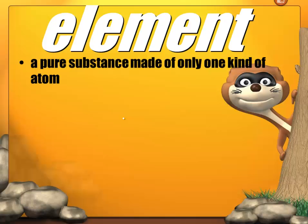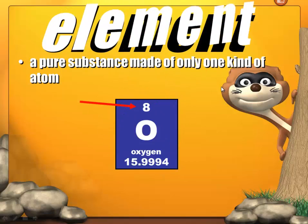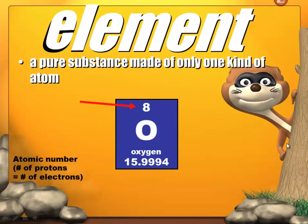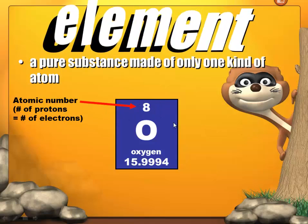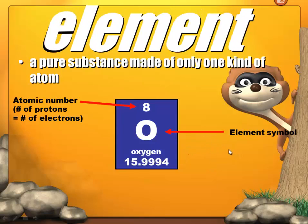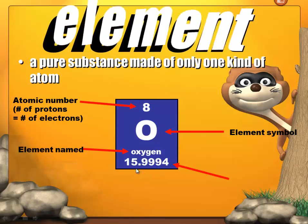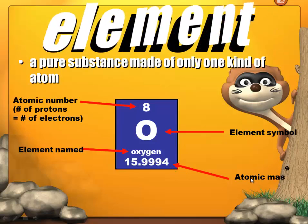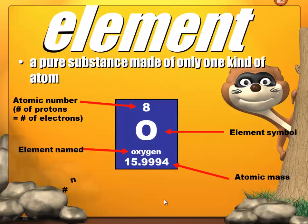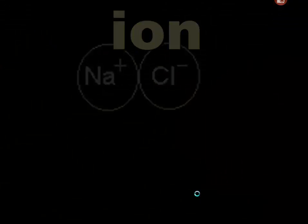An element is a pure substance made of only one kind of atom. Looking at a periodic table entry, the atomic number — here it's 8 — represents the number of protons, which equals the number of electrons. O is the element symbol for oxygen. The atomic mass is shown and we round it to 16. To calculate the number of neutrons, it's atomic mass minus atomic number.